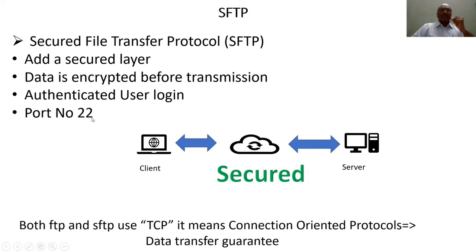The difference between FTP and SFTP is that SFTP works on port number 22. When data is transmitted across the client and server, it is transmitted with the help of the underlying TCP — Transmission Control Protocol. This means a connection is established and there is a reliable data transfer from one end of the system to another. TCP is a connection-oriented protocol that guarantees data transfer between the client and the server.